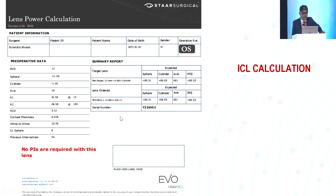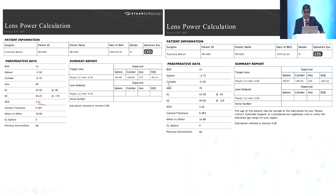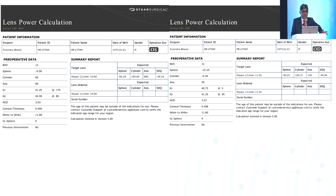The company sends back lens specifications: the type of lens, expected residual refractive error, and the ICL size. For example, a preoperative refraction of minus 11.5 with minus 1.5 diopters cylinder at 10 degrees, with white-to-white of 10.7 mm, yields an ICL size of 12.1 mm. The lens power is 14.5 with plus 1.5 diopters cylindrical correction and the residual expected refractive error is provided. Some cases are done at lower myopia levels when corneal thickness is less.